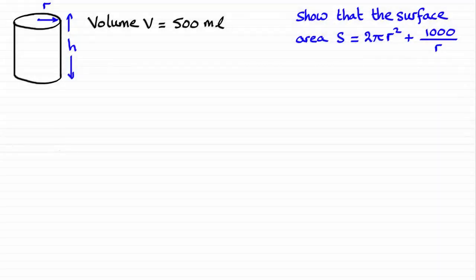For this question, you'll notice that I've just drawn a sketch of the cylinder. It has a radius r and a height h, and we're told that the volume v is 500 millilitres. We have to show that the surface area s is given by this equation here.